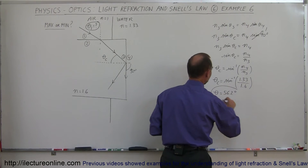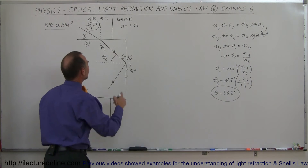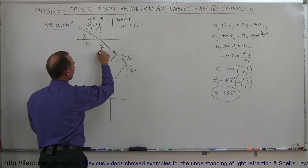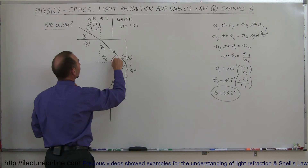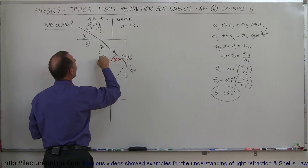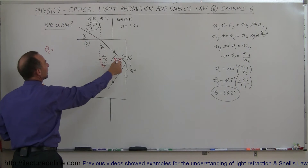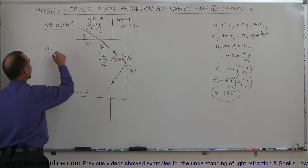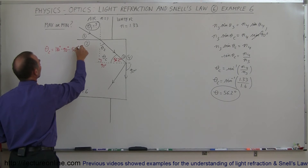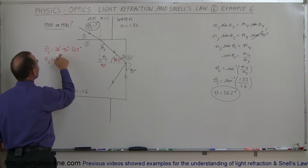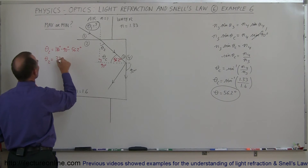Now we can figure out theta_2, the refracted angle across the first boundary. We have a triangle: one angle is the critical angle 56.2°, one angle is 90°, and the third is theta_2. Since angles in a triangle add up to 180°, theta_2 equals 180° minus 90° minus 56.2°, which gives theta_2 equals 33.8 degrees.